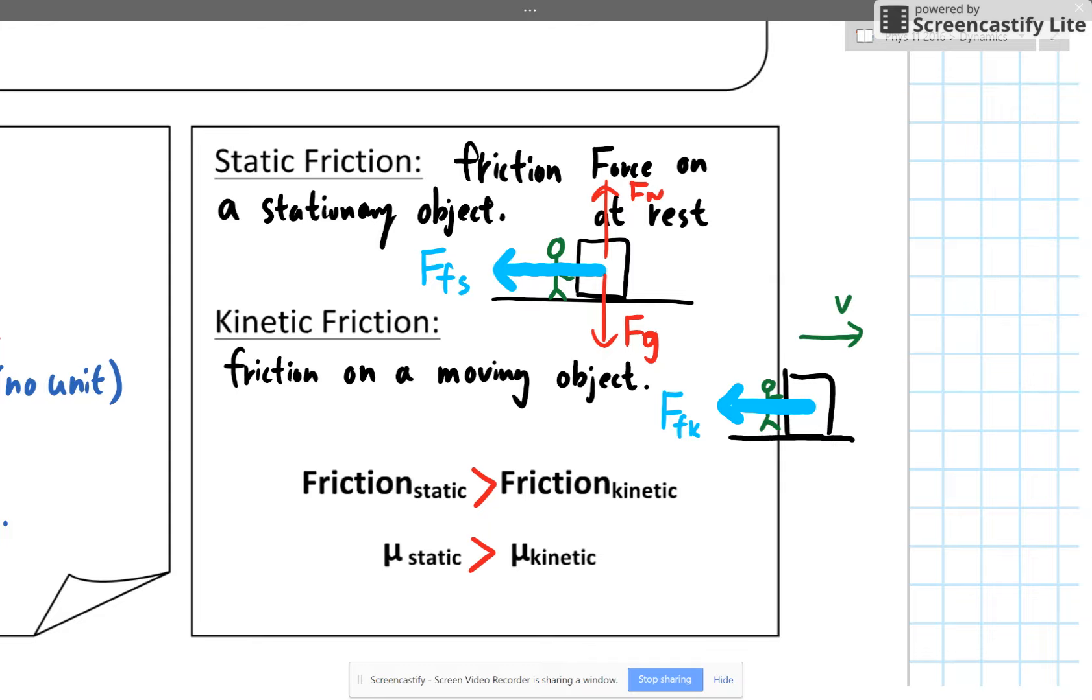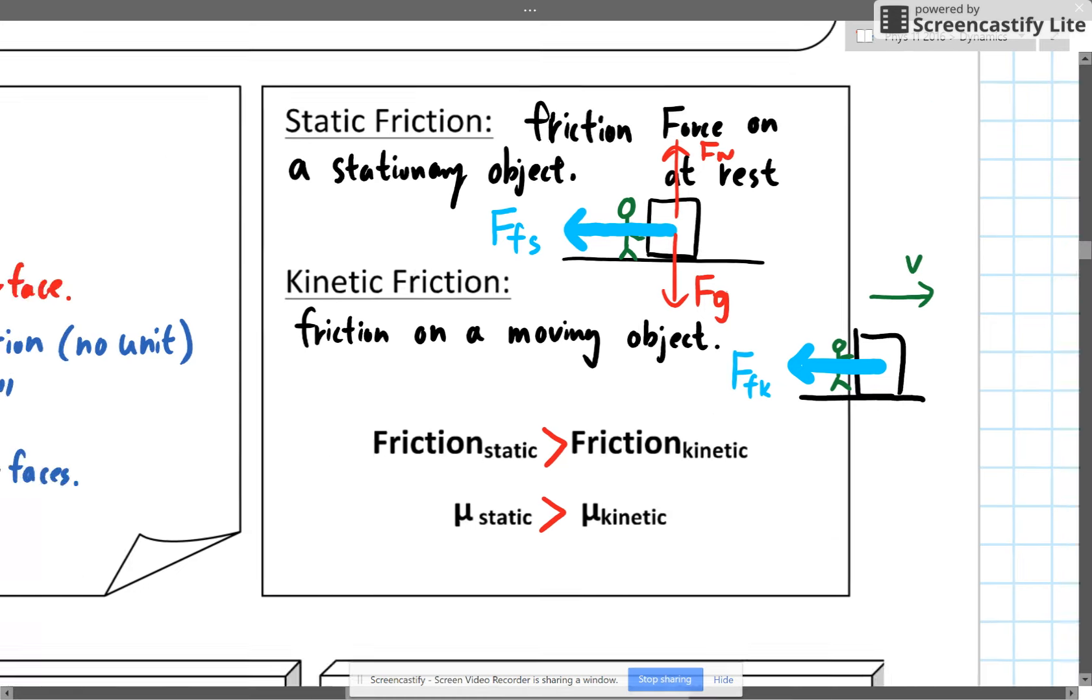Once the car is in motion, it's easier to move because the static friction is greater than the kinetic friction between two surfaces. Now let's look at a few examples really quickly.